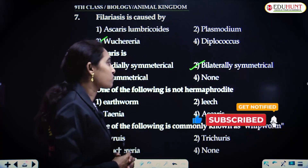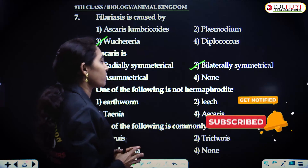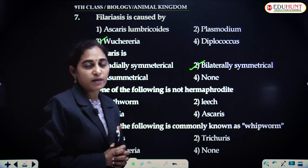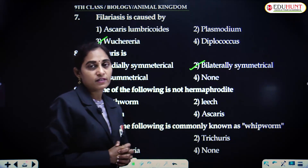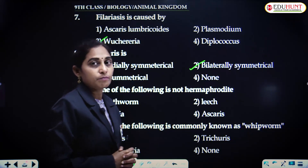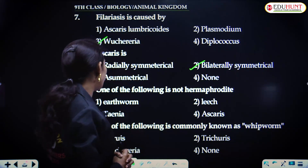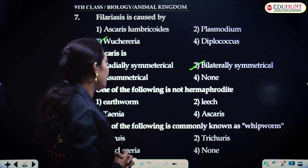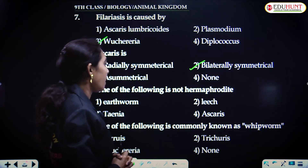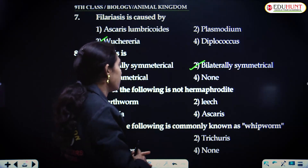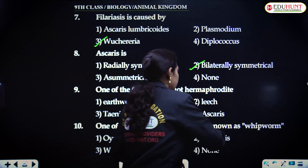One of the following is not a hermaphrodite. Hermaphrodite means bisexual. Among earthworm, Taenia, leech, and Ascaris — Ascaris is not a hermaphrodite.